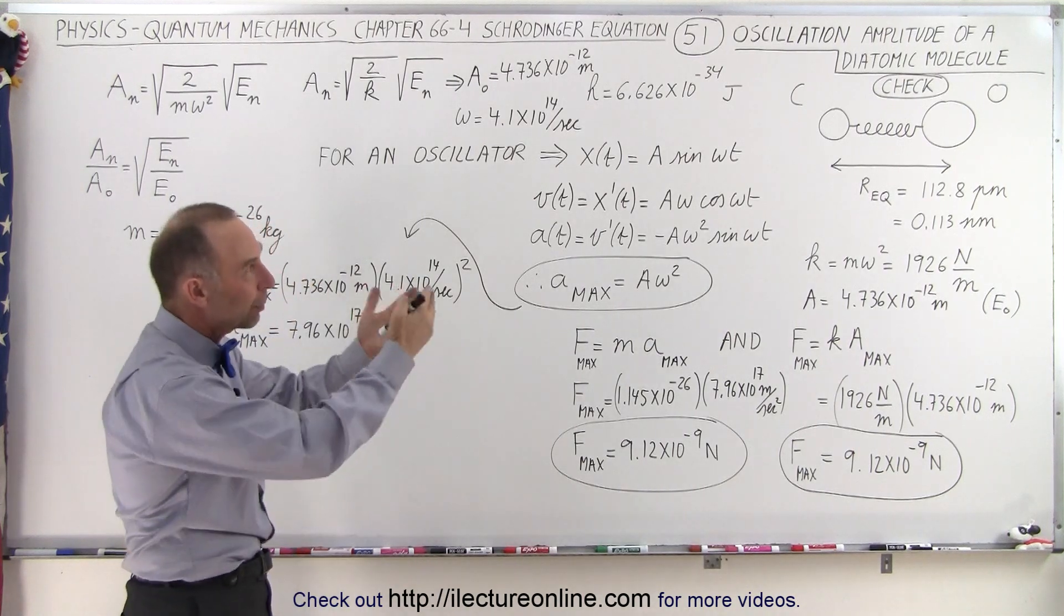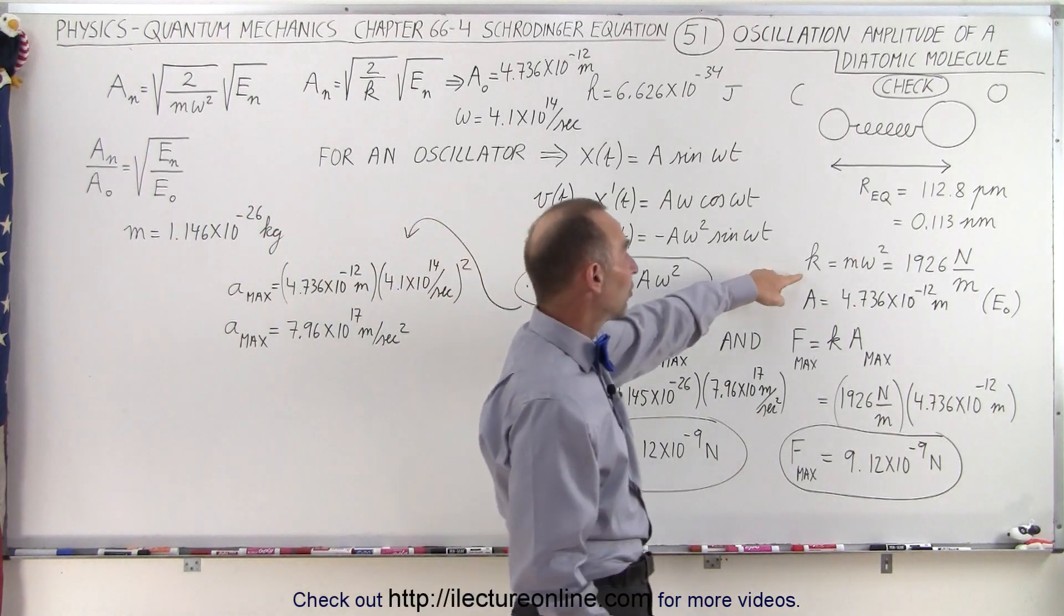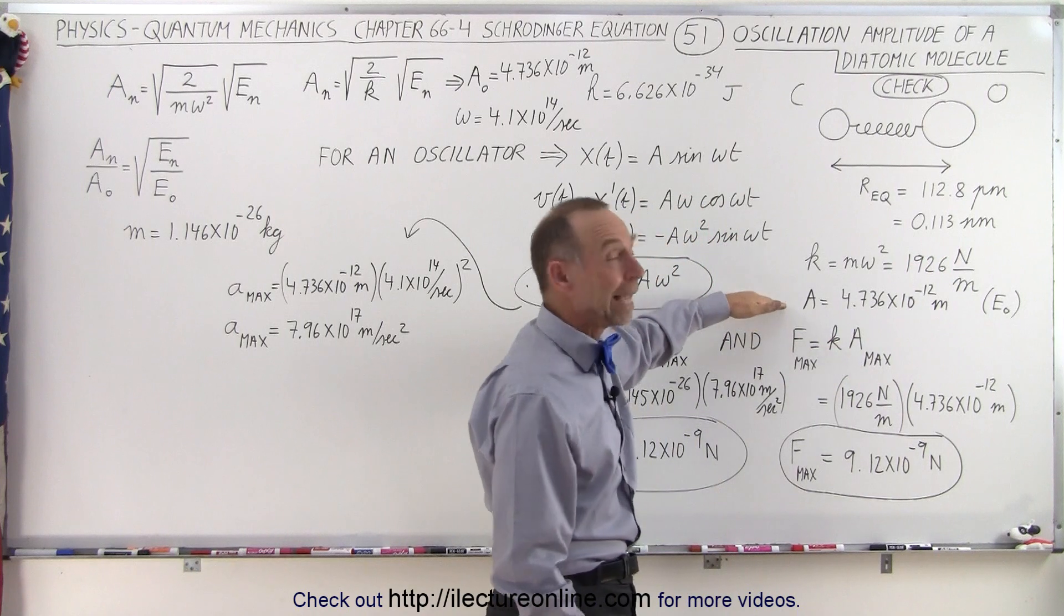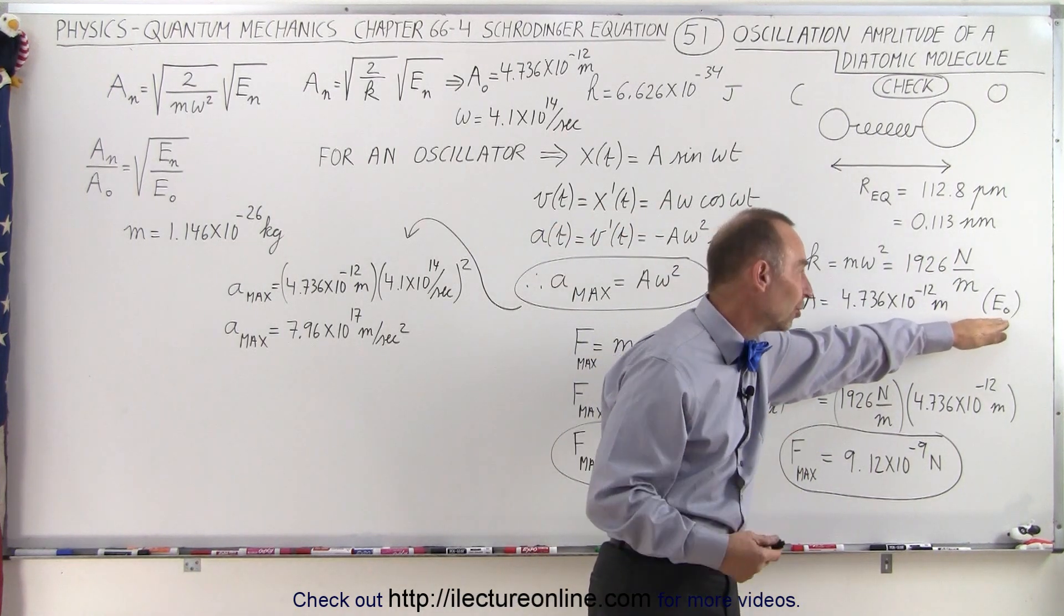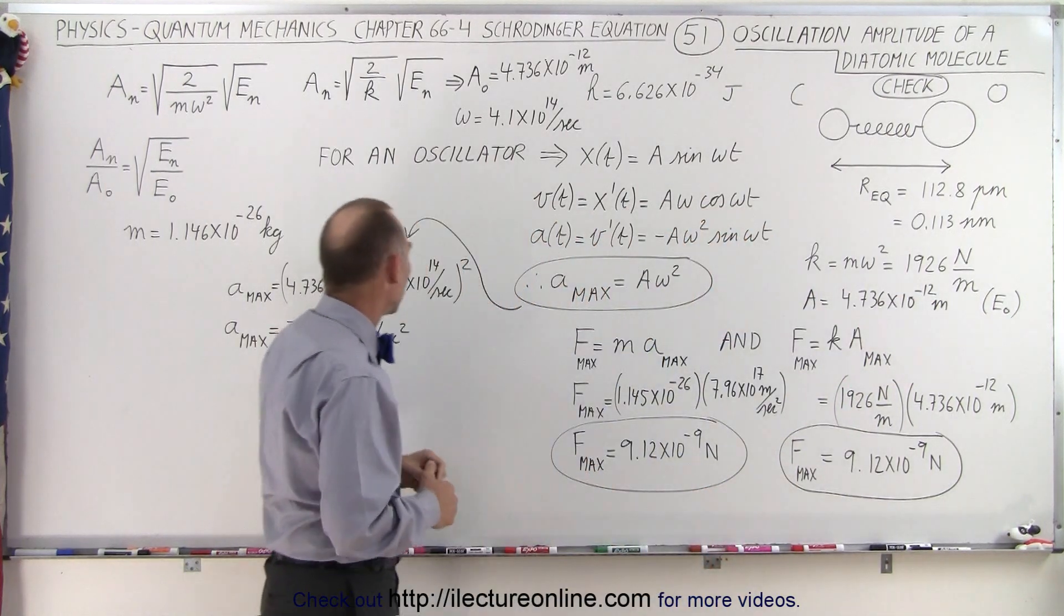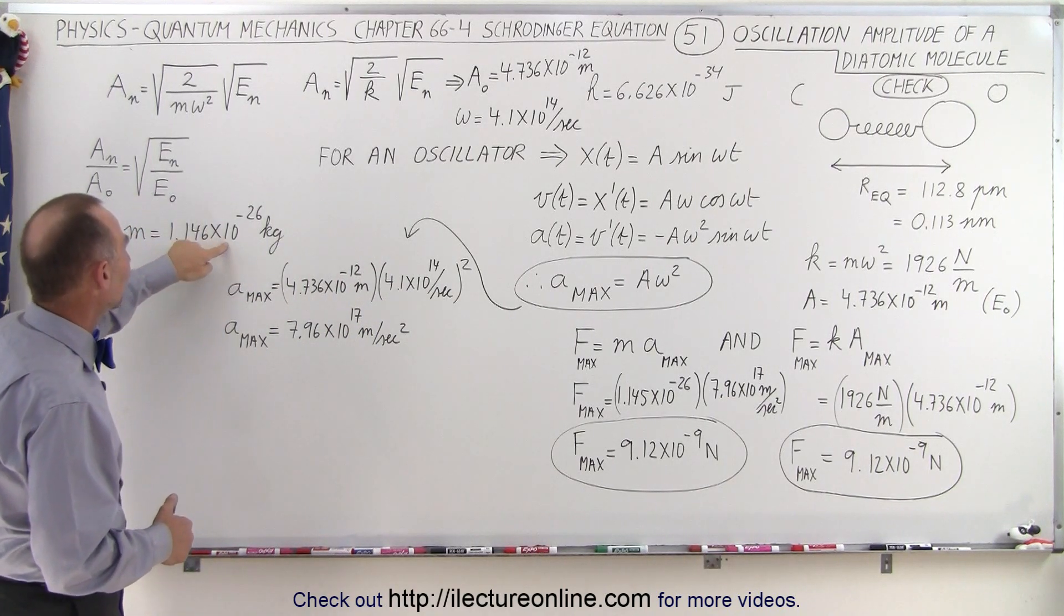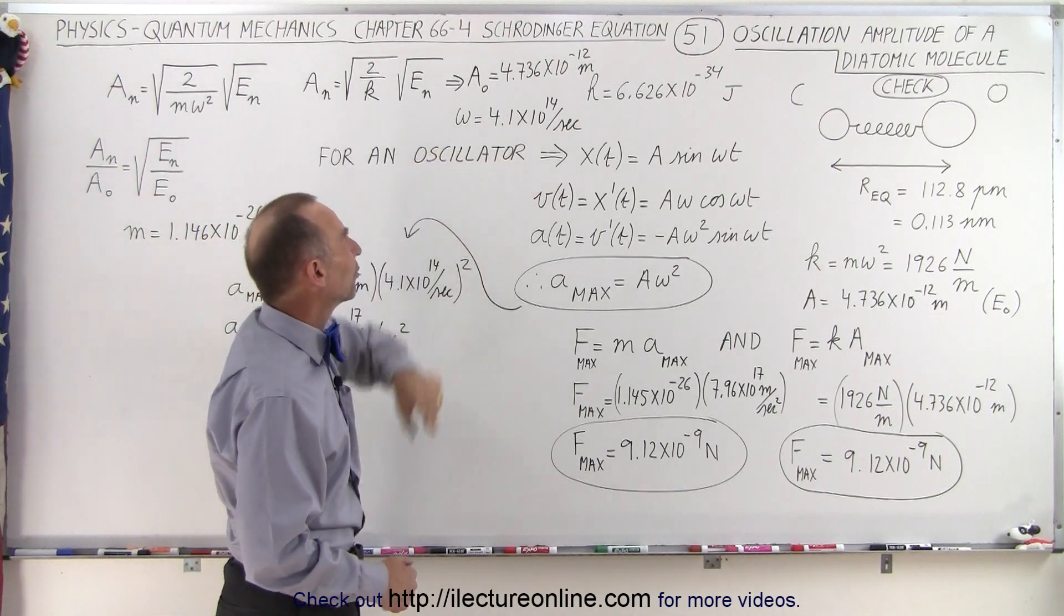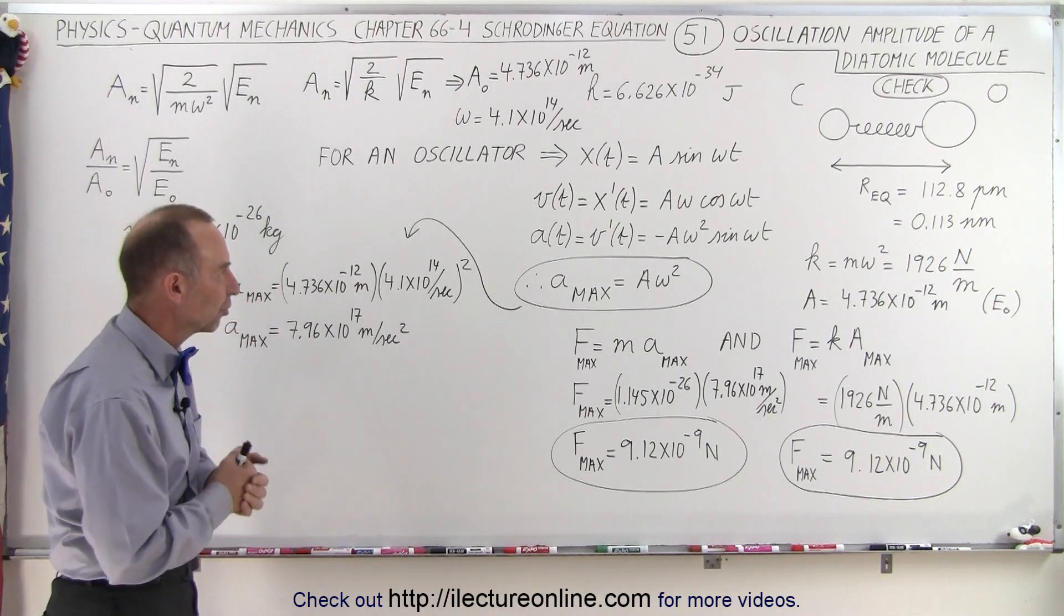So again we take our carbon monoxide molecule and in the previous videos we understood that the spring constant of that molecule was 1926 newtons per meter and the amplitude at the zero energy level at the quantum mechanics state zero, n equals zero, was 4.7 times 10 to the minus 12 meters. We also figured out the reduced mass at 1.146 times 10 to the minus 26 kilograms and the oscillation frequency was 4.1 times 10 to 14 per second. This is radians per second, not oscillations per second.